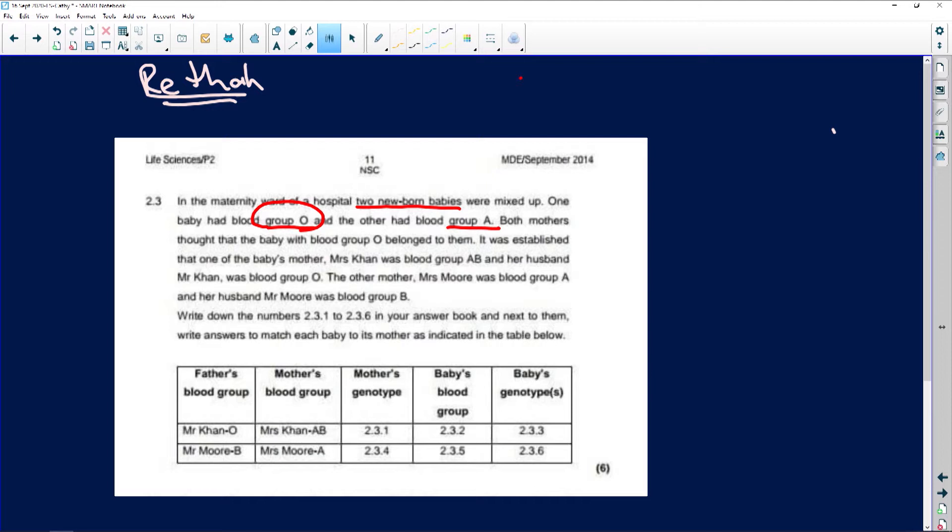It was established that one of the baby's mothers, Mrs. Khan, is blood group AB and her husband is blood group O. The other mother, Mrs. Moore, is blood group A and her husband is blood group B.